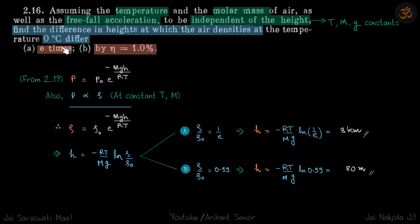At what height will the density differ by e times? That is, ρ becomes ρ₀/e, where ρ₀ is the density on the surface. The second case it differs by one percent, so final ρ is 0.99 times the ρ on the surface of the earth. So ρ = 0.99ρ₀.